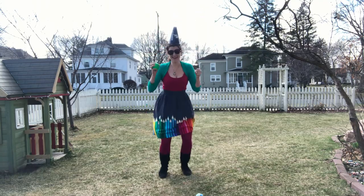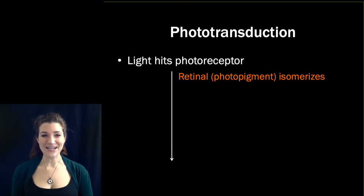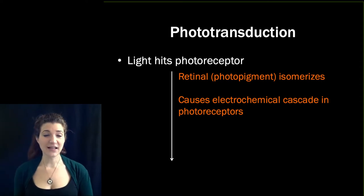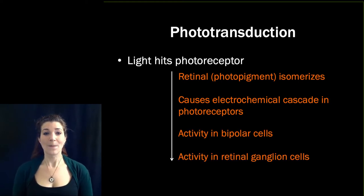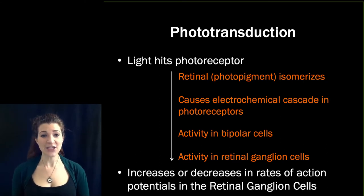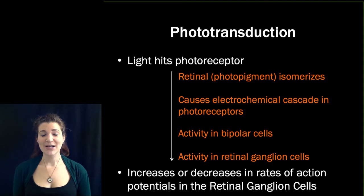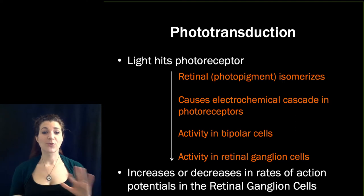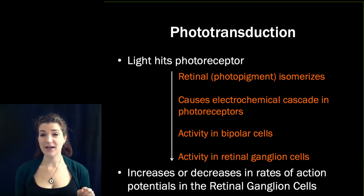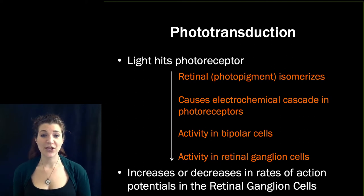When the retinal isomerizes, it leads to an electrochemical cascade that affects the levels of ions in the photoreceptors, which changes their charge. The change in activity in the photoreceptors ultimately leads to changes in activity in the bipolar cells and the retinal ganglion cells. So what began as light hitting the photoreceptor ends up coded as an increase or decrease in the rate of action potentials from the retinal ganglion cells being carried up to the brain. If you want more information on the nitty-gritty physiology of phototransduction, there's an optional video on Moodle.